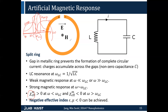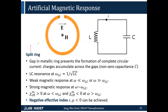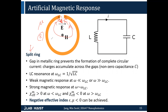There's still a problem, however: in this case, we are not only engineering mu, but the electric response epsilon is also affected because you have a plus and minus charge at the gap. Basically, if you have a capacitance, that capacitance gives you an electric dipole. This electric dipole oscillates as your current oscillates, so this split ring not only creates a magnetic dipole but also an electric dipole. What we want to do is to separate the electric response from the magnetic response.